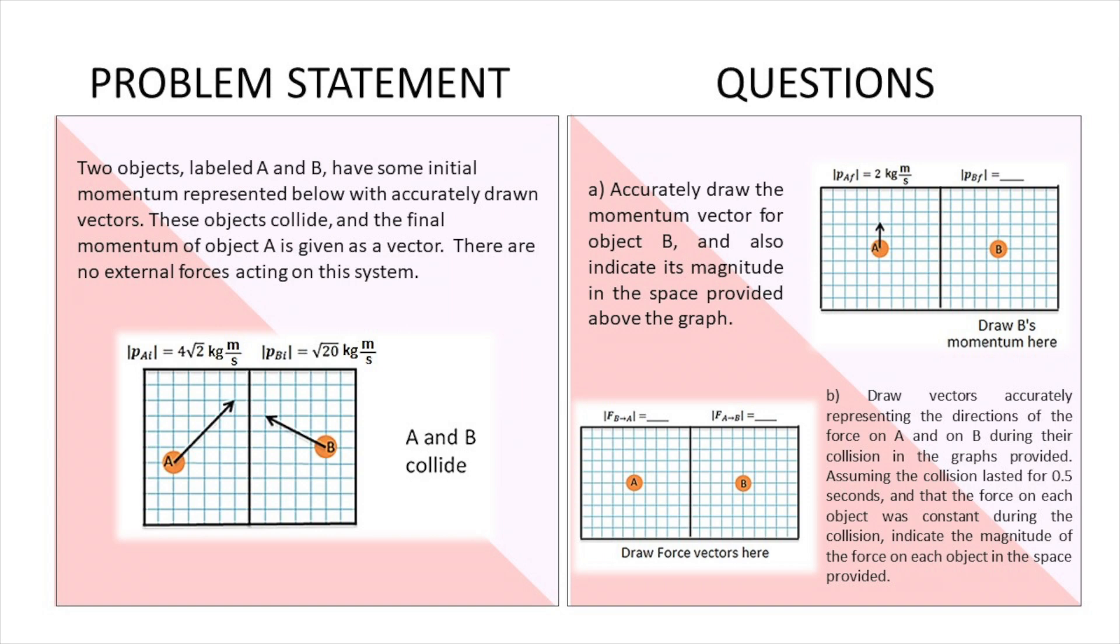So we have two objects, A and B, and they both have some initial momentum, which is represented below with accurately drawn vectors. These two objects collide, and the final momentum of object A is given as a vector. There are no external forces acting on this system. The two things that we have to do is first figure out the final momentum vector for B, which is not given to us in instructions, and then B, we have to draw force vectors of force B on A and A on B also in scale.